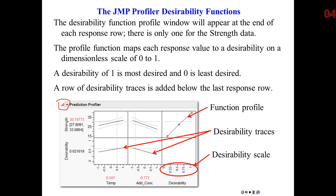you get a function profile. That's the shape of the desirability profile, and you'll see in a moment that's tied directly to what your objectives are for optimization. And you get what are called desirability traces. There's actually a desirability response surface,